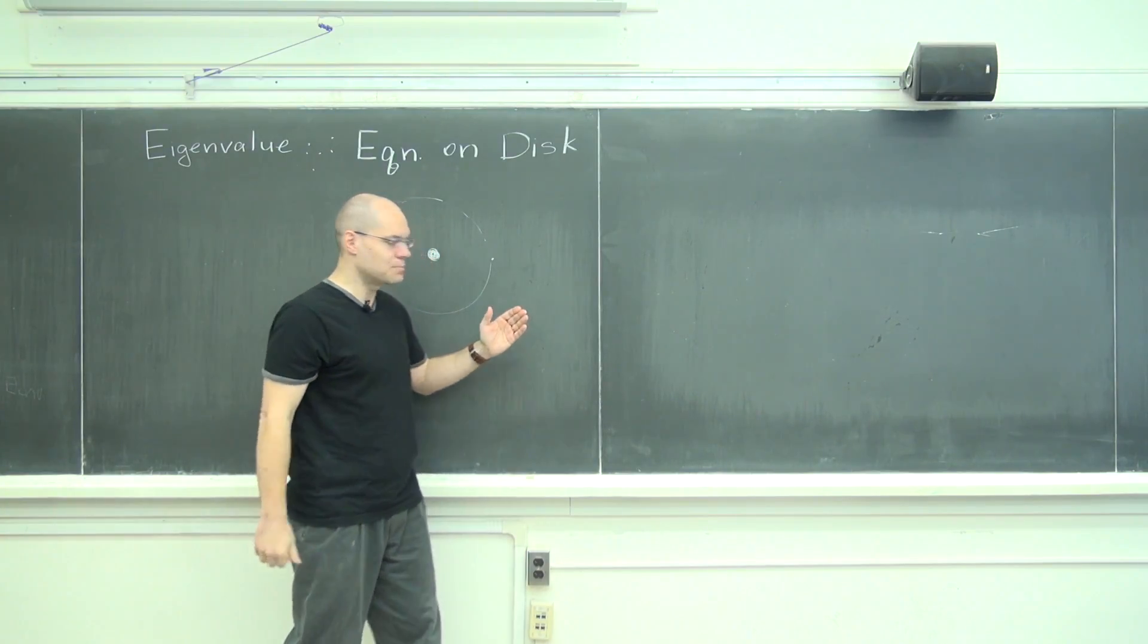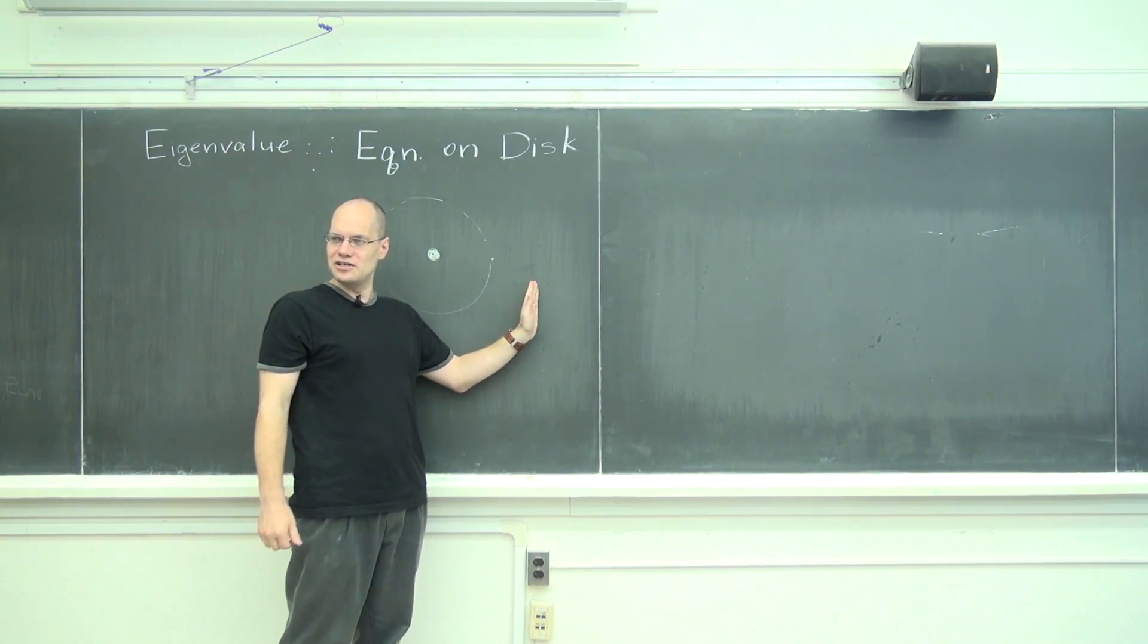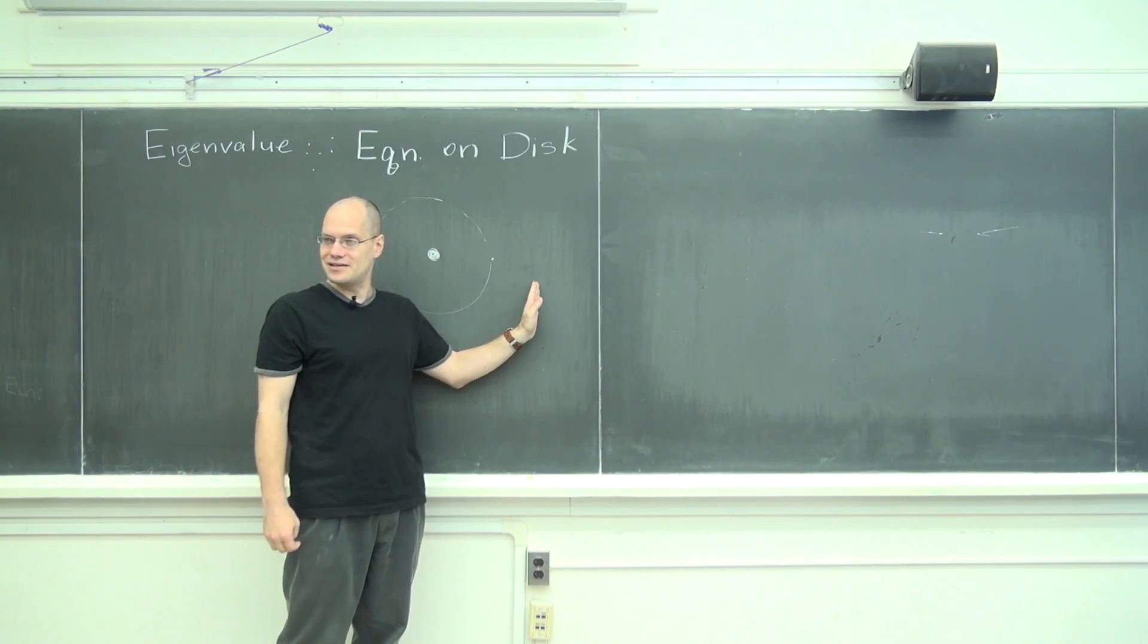So then there was Copernicus who did his calculations and was very very confident that in fact the earth moves around the Sun.